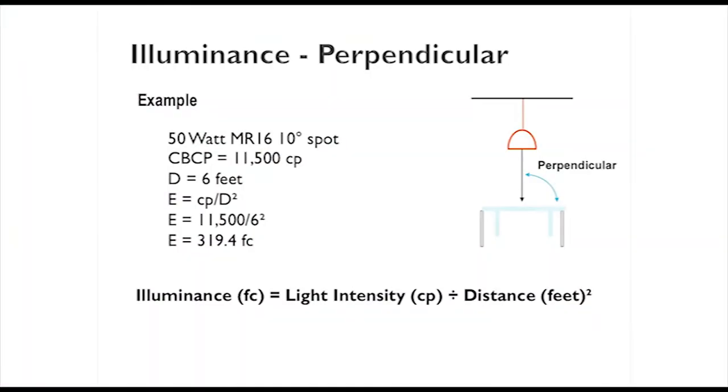Let's have an example. If we have a 10 degree spot, it has an 11,500 candle power. At 6 feet away, 6 is the distance, the intensity is 11,500. 11,500 divided by 6 squared equals 319.4 foot candles.